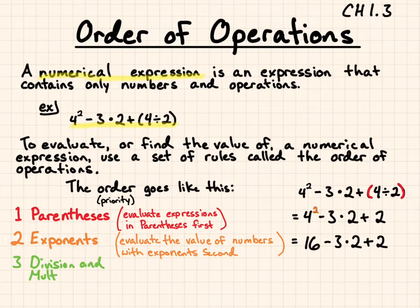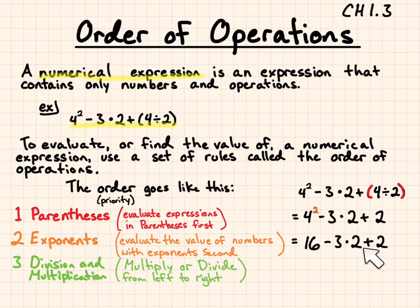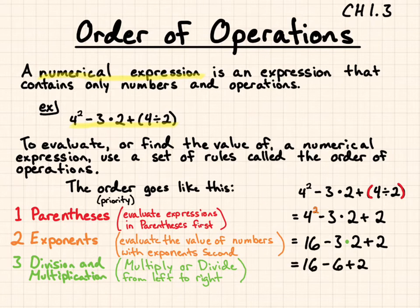Third would be division and multiplication, done at the same level. You multiply or divide from left to right. If you see a string of division or multiplication, you read it the same way you read text — left to right. I do have multiplication here: 3 times 2 is 6.